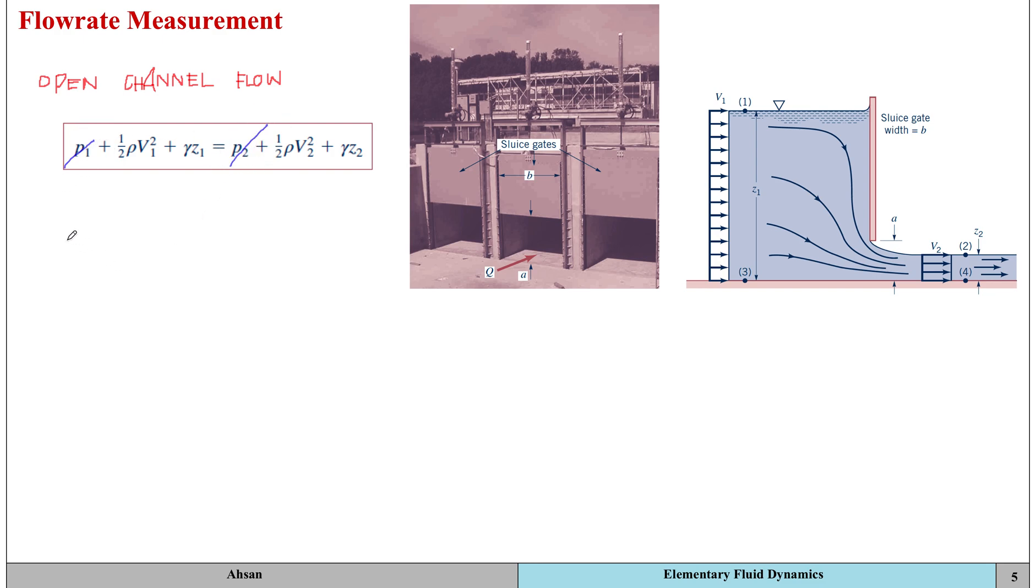We are left with this equation where we've got the velocity profiles at 1 and 2. We assume these velocity profiles are uniform because section 1 is far upstream and section 2 is far downstream of the gate.